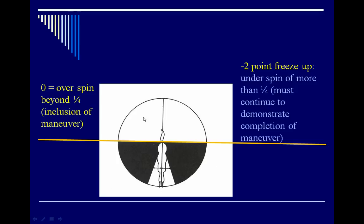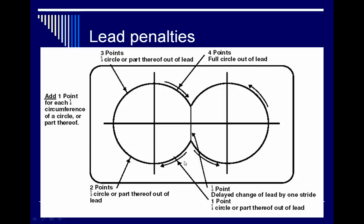As an example, if they've completed their four spins and go beyond the fourth spin into the overspun area past the quarter turn, that's a score of zero. However, if within the third spin they stop prematurely and then go ahead and finish, that's considered a two-point freeze since they did complete the spin.